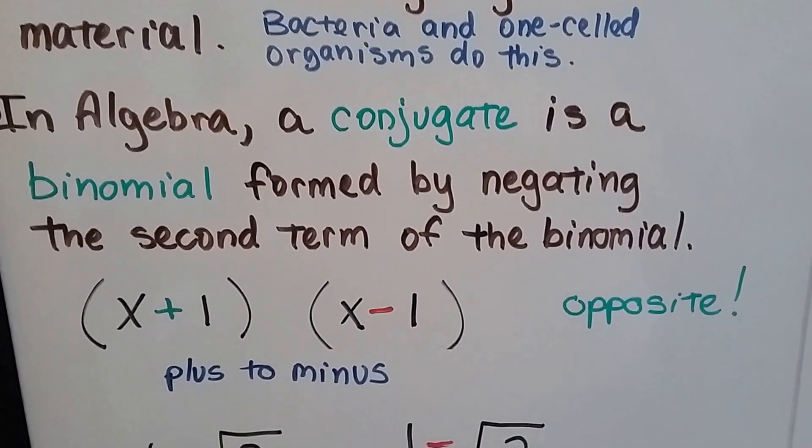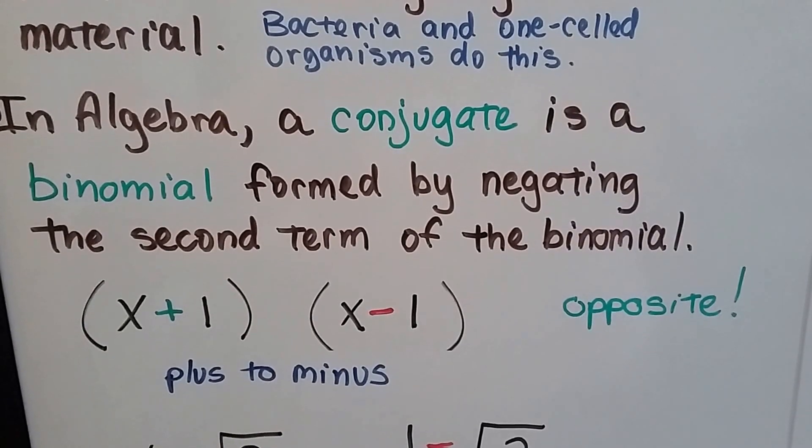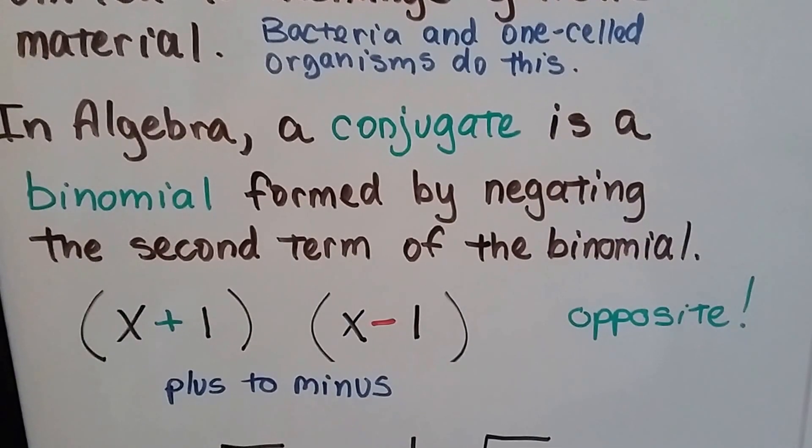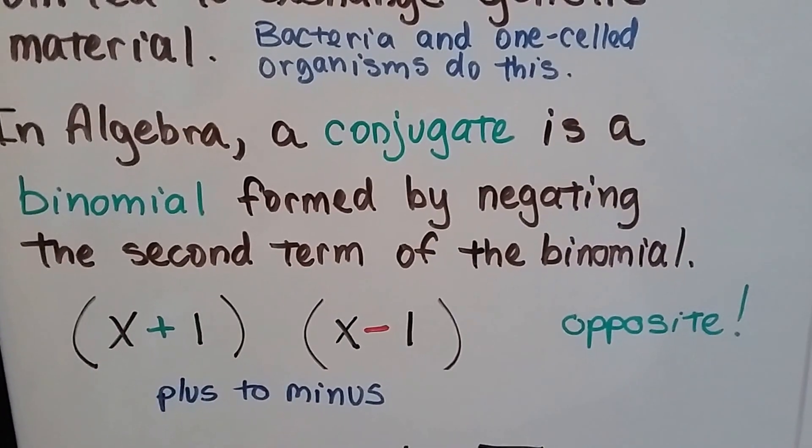a conjugate is a binomial formed by negating the second term of the binomial. So negating means making it a negative or making it an opposite.